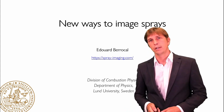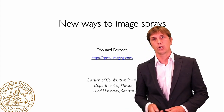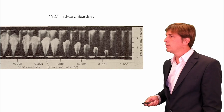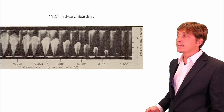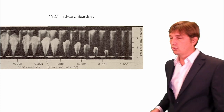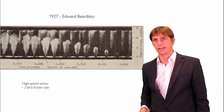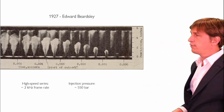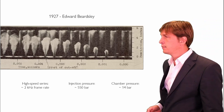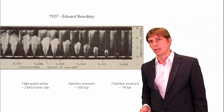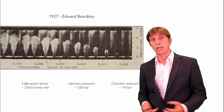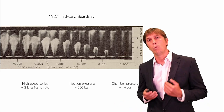The picture I'm going to show you now is probably one of the first ever recorded high-speed image series of an atomizing spray. This was done in 1927. In this example, the frame rate was set to 2000 frames per second and the liquid fuel was injected at 550 bar within the surrounding air pressurized at 14 bar. Those operating conditions were really challenging, and one may be curious to know how it was possible to generate such image series nearly 100 years ago.